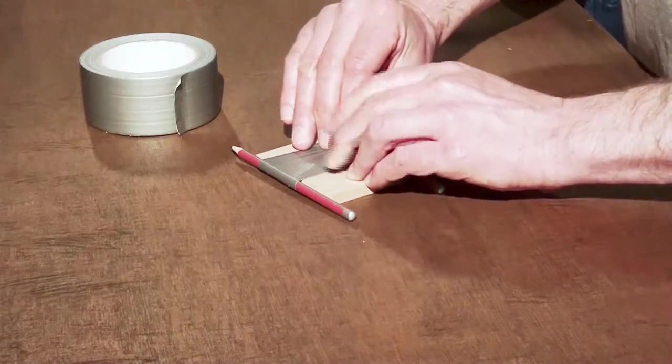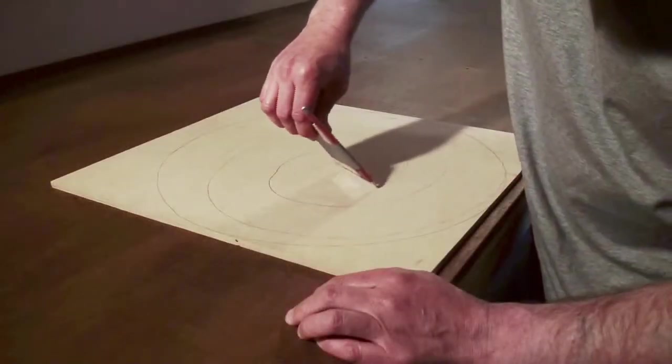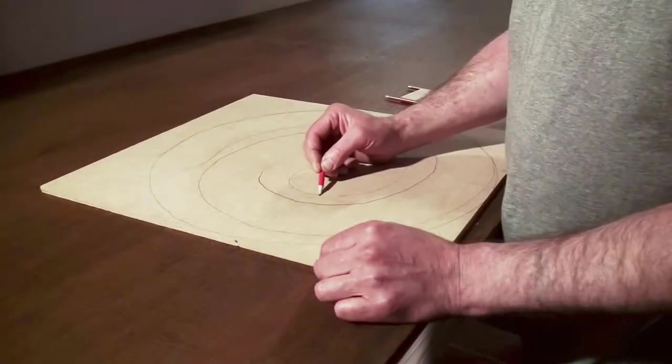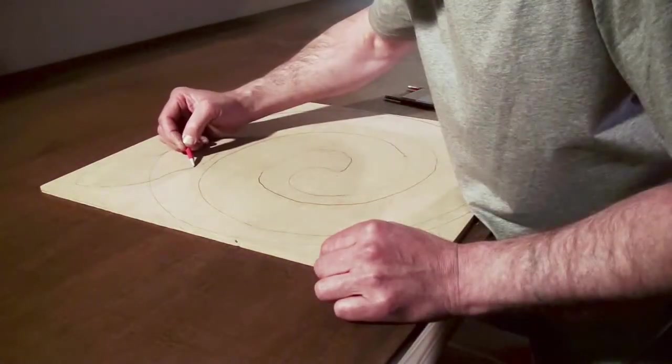Tape a pencil to each edge and then draw the coiled body of the snake inside the circle. Create the head and tail by drawing them freehand.